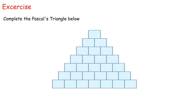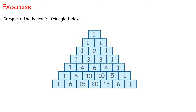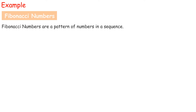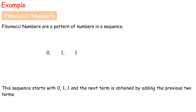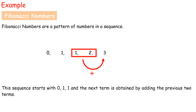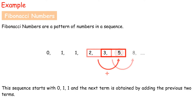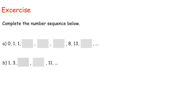Exercise: Complete the Pascal's Triangle below. The answer is as follows. Fibonacci numbers: Fibonacci numbers are a pattern of numbers in a sequence. This sequence starts with 0, 1, 1, and the next term is obtained by adding the previous two terms. Exercise: Complete the number sequence below. The answer is as follows.